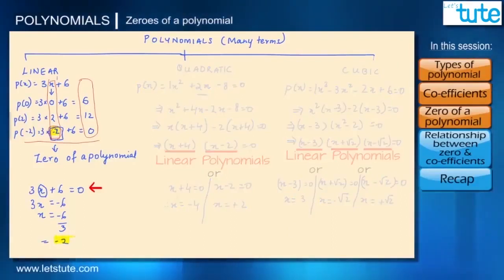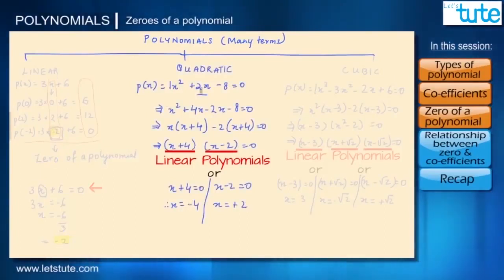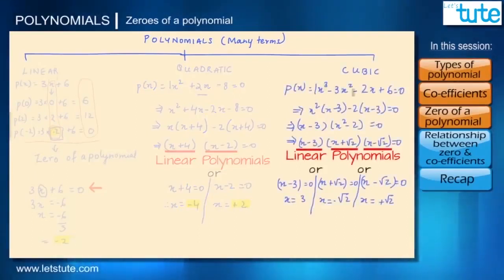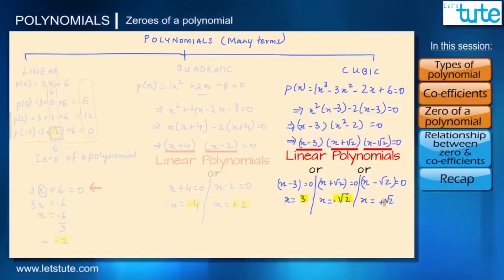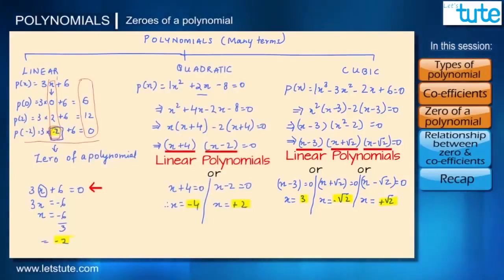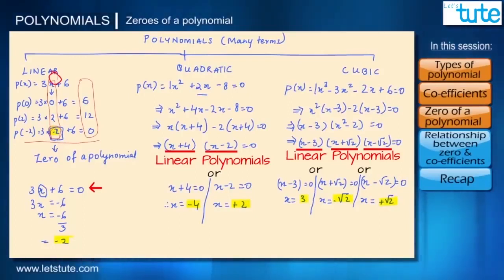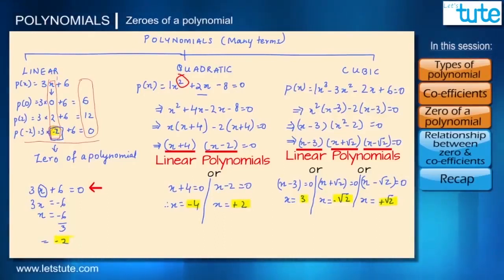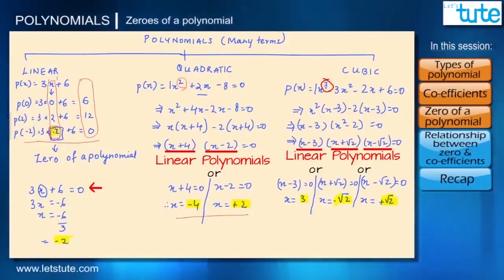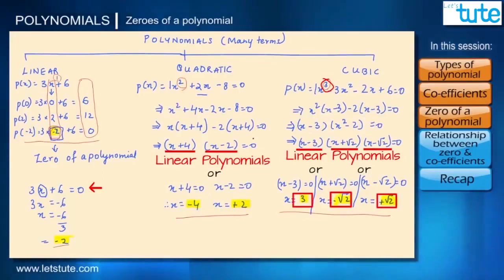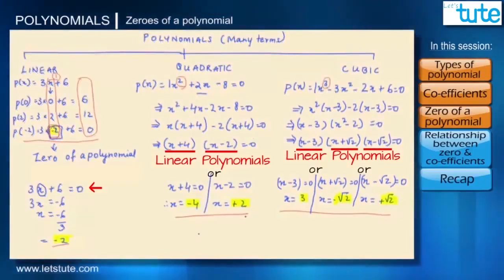The zeros of the linear polynomial 3x + 6 is minus 2. The zeros of the quadratic polynomial x² + 2x − 8 are minus 4 and plus 2. For the cubic polynomial, the zeros are 3, minus root 2, and plus root 2. From this we can say: a linear polynomial of degree 1 can have one zero; a quadratic polynomial of degree 2 can have up to two zeros; and a cubic polynomial of degree 3 can have up to three zeros.